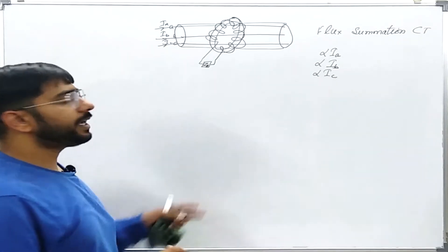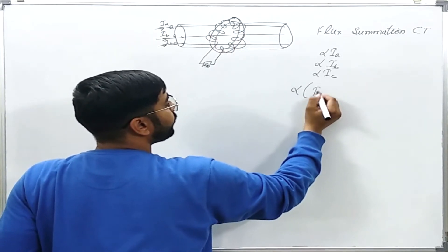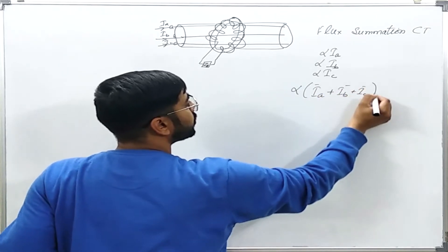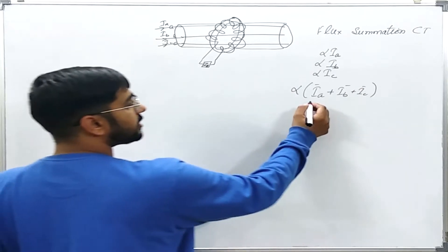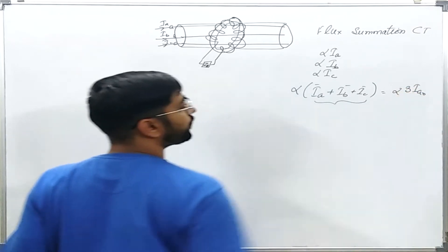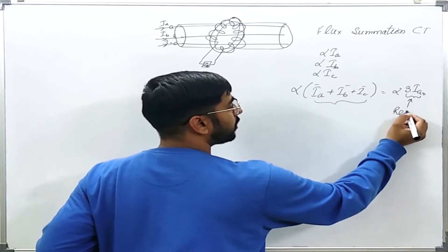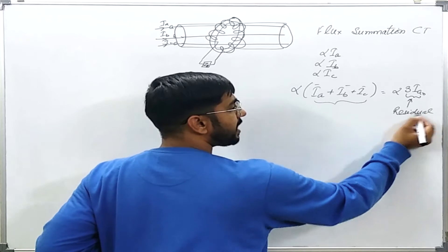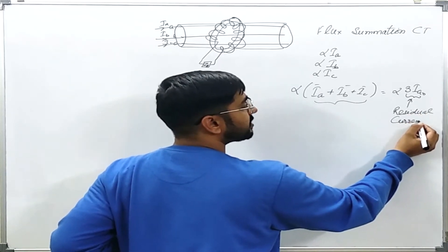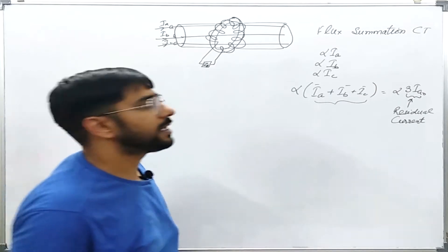The resultant flux in the CT core will be proportional to the phasor sum of IA plus IB plus IC. You see that this is nothing but equal to 3 times IA0. This quantity is usually called residual current. We will see this terminology many times during the study of power system protection. We will also face the term called residual voltage, which is nothing but the similar concept in terms of voltages only.